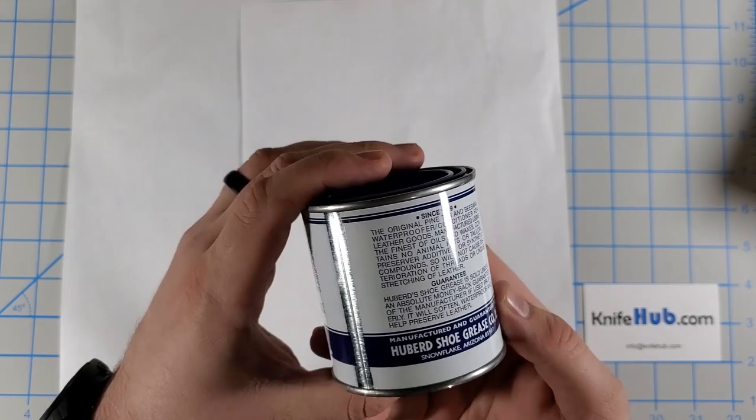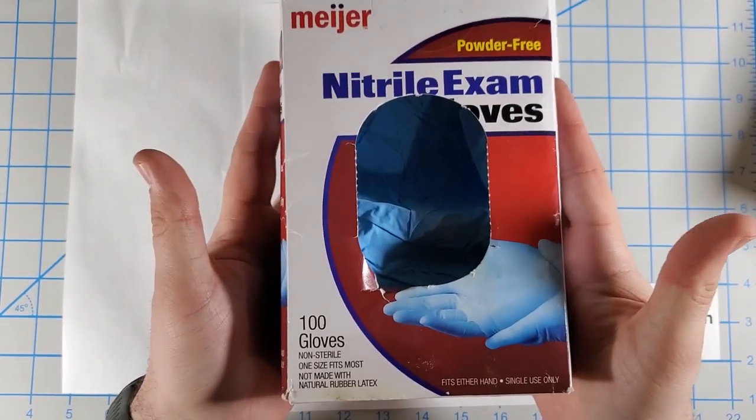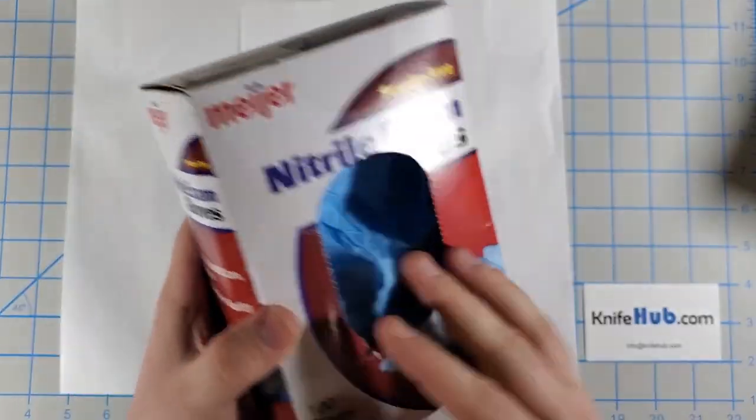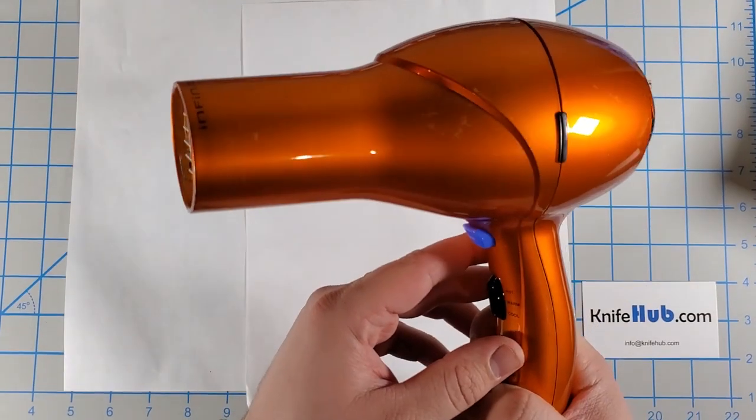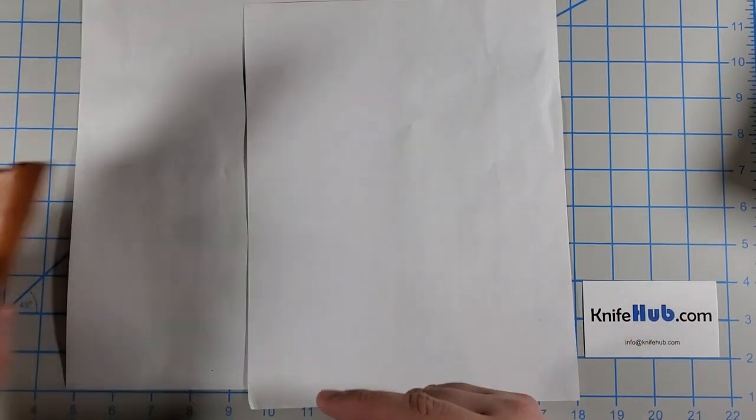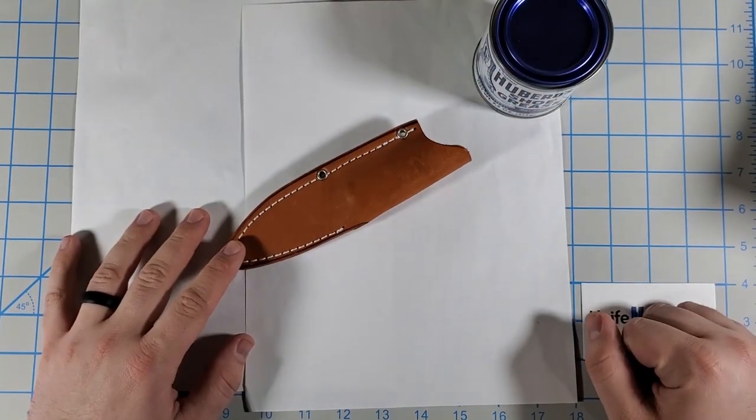which is used for treating and waterproofing leather. Some nitrile exam gloves, just so I'll stay clean. Hair dryer to apply some heat. So, I'm going to get the gloves on, get the grease opened, and we'll see how this goes.